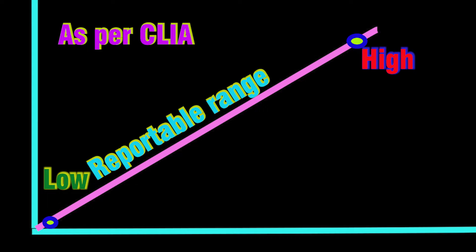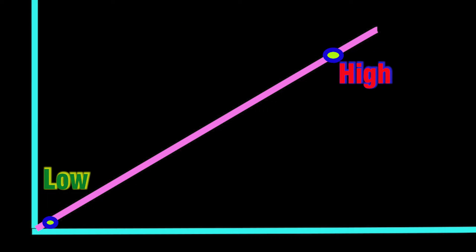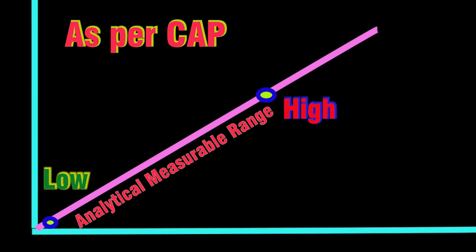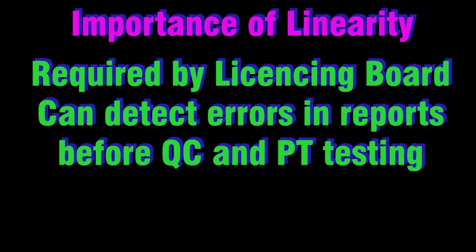Here, linearity is outlined as the relationship between the final analytical result for a measurement and the concentration of the analyte being measured. As per the College of American Pathologists (CAP), the analytical measuring range is the range of concentration of an analyte that a method can directly measure without any dilution, concentration, or other treatment.